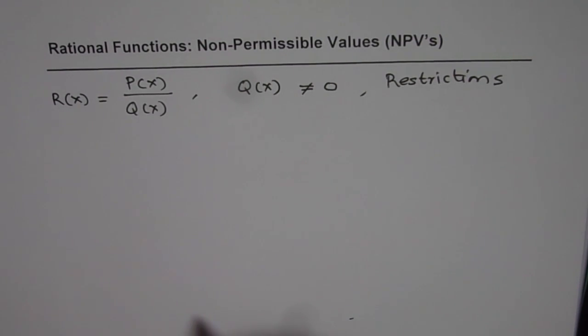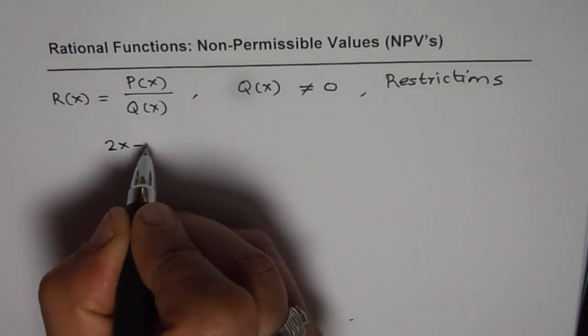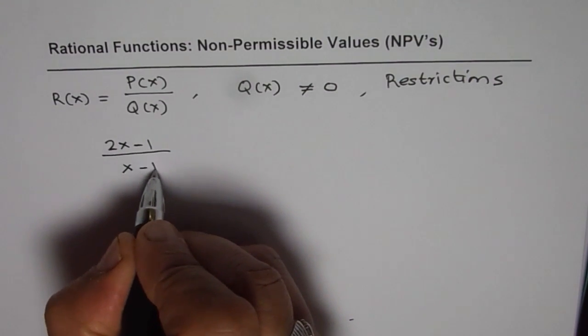We will explore a few examples and it is for you to figure out and write down all the non-permissible values for the given rational functions. I will give you one example which is 2x minus 1 divided by x minus 1.